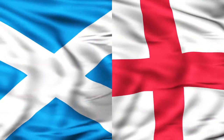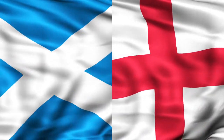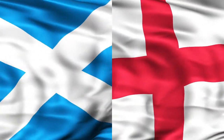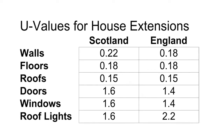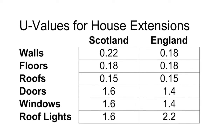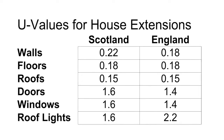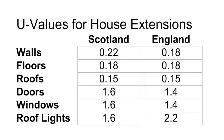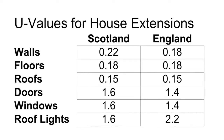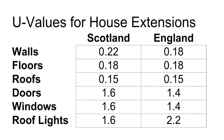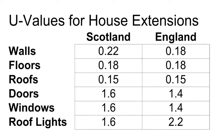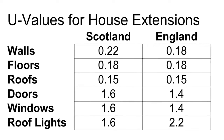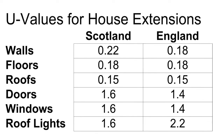At present, the building regulations in England differ from those in Scotland, but not by much. This table shows the U-values required for new walls, floors, roofs, windows, doors, and roof lights when extending a house in the various parts of the UK. What should be obvious from this table is that a wall, floor, or roof is required to be far more energy efficient and conserve much more heat than a window, door, or roof light.